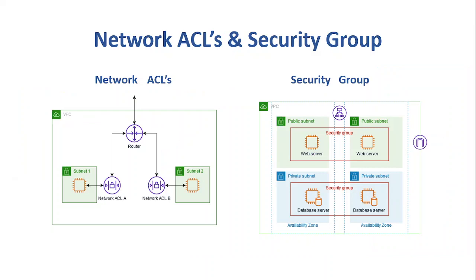Let's jump into the last two topics: network ACL and security groups. These are additional security features. A network ACL is basically a firewall attached to a subnet — it is an optional layer of security for the VPC. A security group, on the other hand, is associated with the instance, such as an EC2 instance, and acts as a firewall there. The main difference is that network ACL operates at the subnet level, while security groups operate at the instance level, whether it's EC2, RDS, or other services.